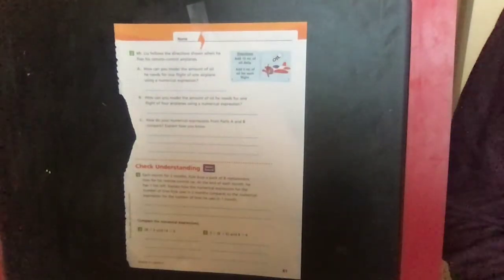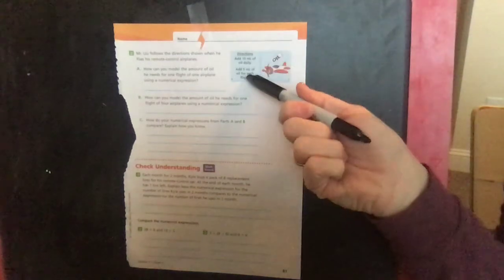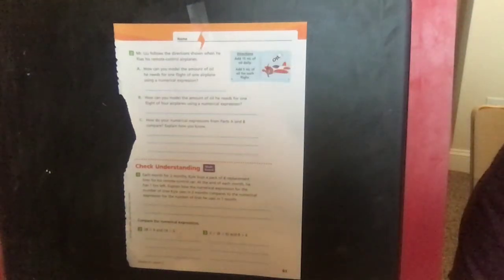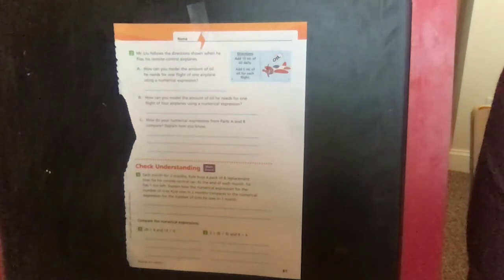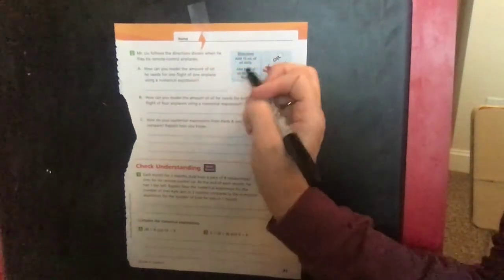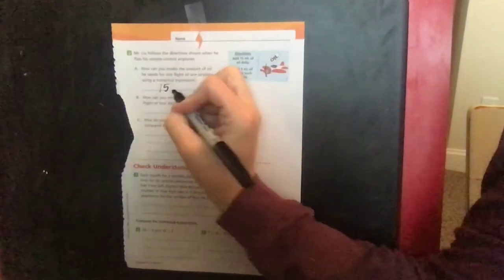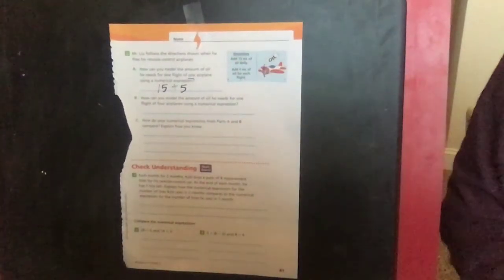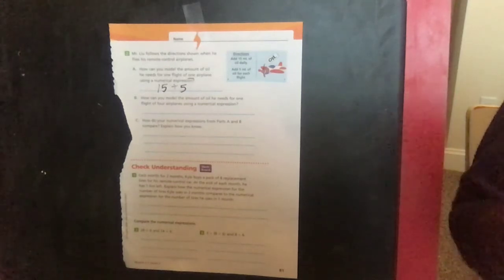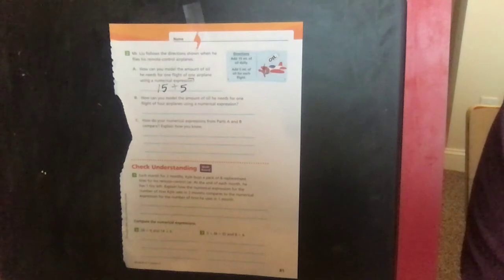So on page 81 it says Mr. Loo follows the directions shown when he flies his remote control airplanes. There's our directions: we're going to add 15 milliliters of oil daily, add 5 milliliters of oil for each flight. How can you model the amount of oil he needs for one flight? Remember, daily he needs 15, and if he's just going on one airplane ride, then we would say 15 plus 5, because each flight we need to have five.